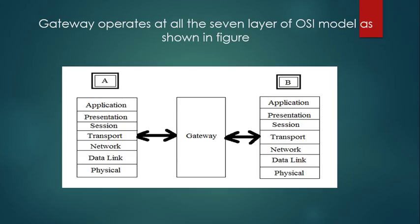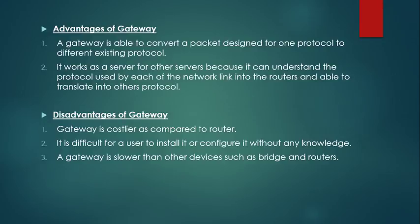A gateway operates at all the similar layers of the OSI model as given in the figure. The advantages of a gateway are: it is able to convert a packet designed for one protocol to a different existing protocol. It works as a server for other servers because it can understand the protocol used by each of the network links into the routers and is able to translate into other protocols.